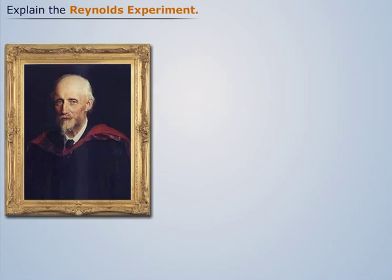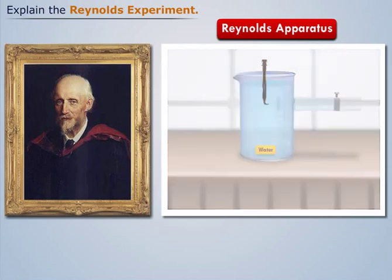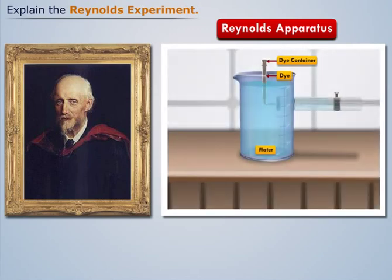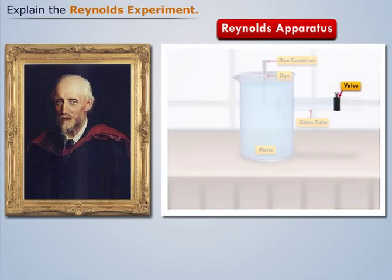For this, he designed a setup called the Reynolds Apparatus, which mainly consists of three parts: a large tank containing water at a constant head, a small tank containing some liquid dye having the same specific weight as that of water, and a horizontal glass tube having an opening to the water tank from one end and a regulating valve at the other end.